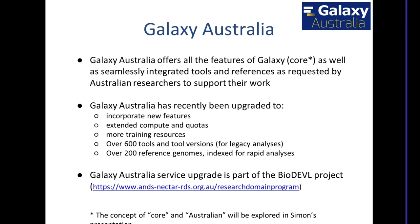Galaxy Australia, thanks to the upgrade, has extended compute and quota on storage of your raw data for analysis — it is not a storage system, but hosting of your raw data for analysis. We've been able to rationalise our training resources. Galaxy Australia has over 600 tools now, and importantly tool versions, so if you are attempting to repeat a legacy analysis or a particular published workflow you should be able to access tool versions where they are still applicable. Galaxy Australia also hosts over 200 different reference genomes, indexed for rapid analyses in their appropriate tools.